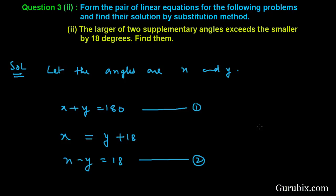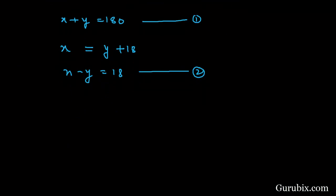Now we shall solve these two equations by using substitution method. From equation number one, we have X plus Y equals 180 degrees. Now we shall write the value of X in terms of Y. Then X equals 180 minus Y.